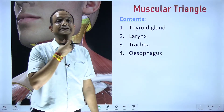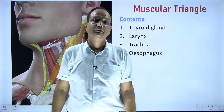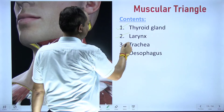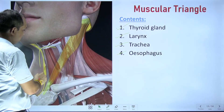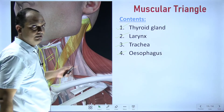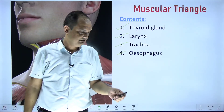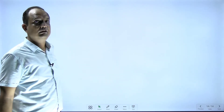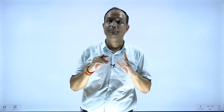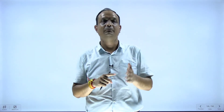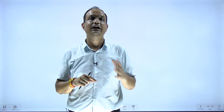The contents of the muscular triangle include the thyroid gland, larynx, trachea, and esophagus. To summarize this session on the anterior triangle of the neck: we covered the boundaries of the anterior triangle, its subdivisions, the muscular triangle's boundaries and floor. In the next session, we will discuss the carotid triangle in detail.